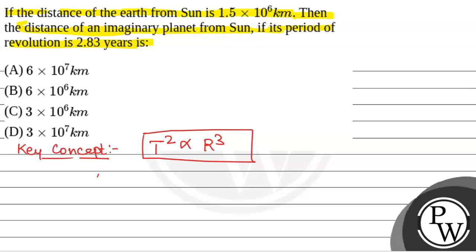From here we have t1 by t2 square that will be equal to r1 by r2 cube. We have time period of earth is 1 year.